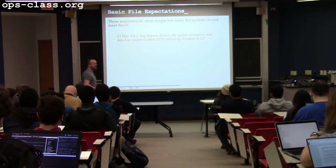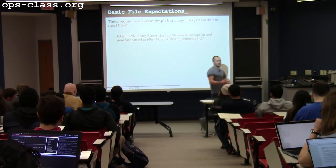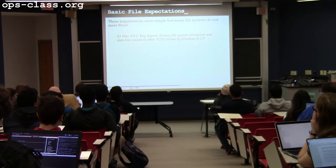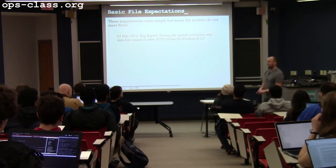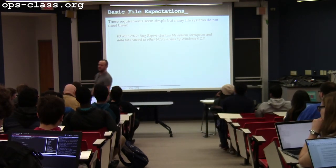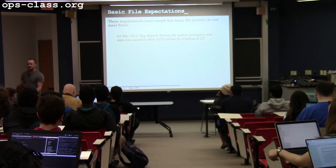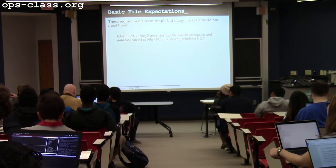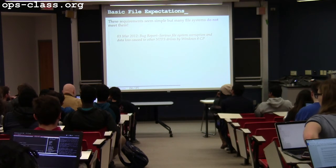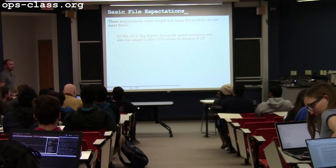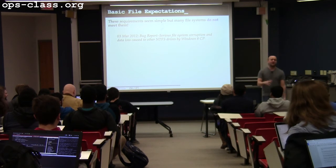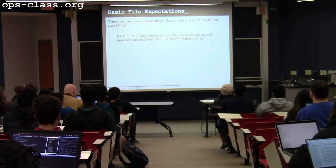These basic file expectations seem simple, but there are still bugs. File systems are complicated, and there are still bugs in modern file systems. Margo worked on file systems for a long time and used to say data loss is one of the worst bugs ever. If your file system loses data, not only is the person angry, but they now have all the time in the world to call you, send nasty emails, flame you on Hacker News. So data loss is really bad — and file systems still do this.